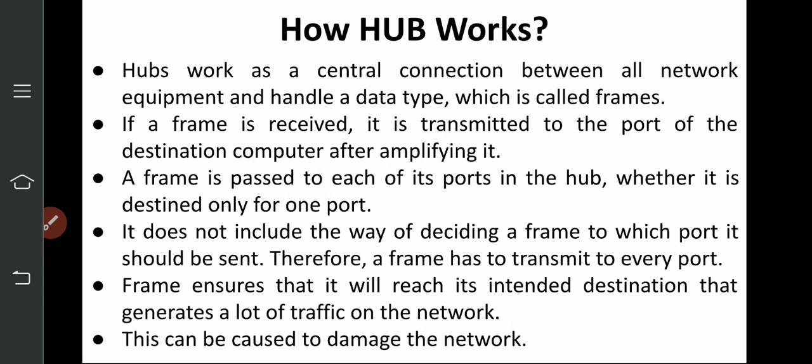If a frame is received, it is transmitted to the port of the destination computer after amplifying it. A frame is passed to each of its ports in the hub, whether it is designated only for one port. Since the hub has no IP address or routing table, it cannot decide which port to send the frame to. Therefore, a frame has to be transmitted to every port to ensure it reaches its intended destination. This generates a lot of traffic on the network.